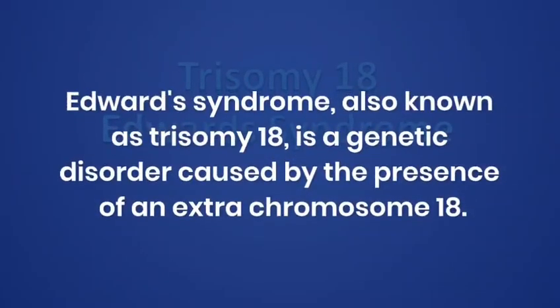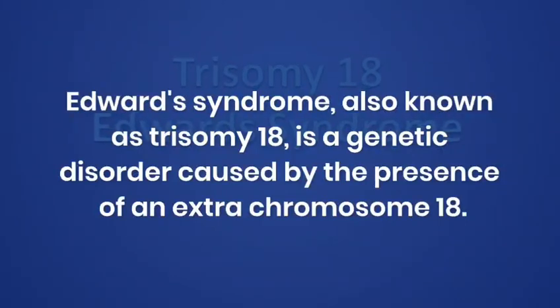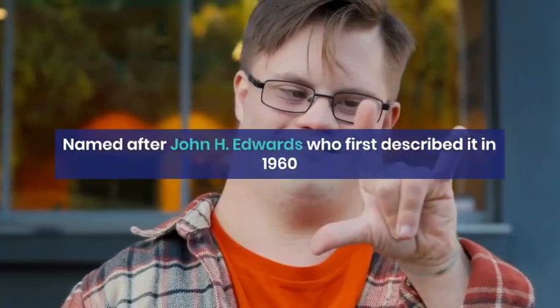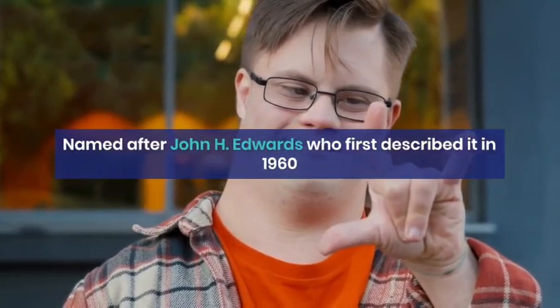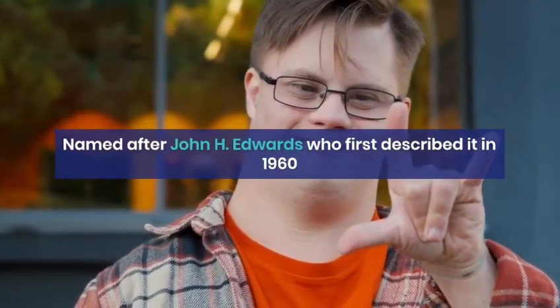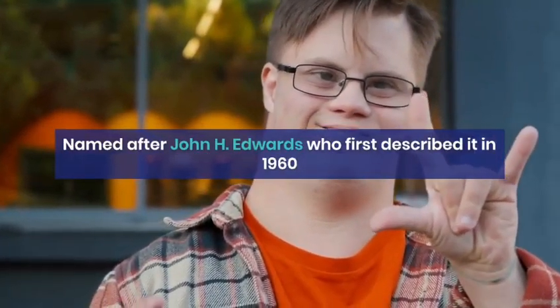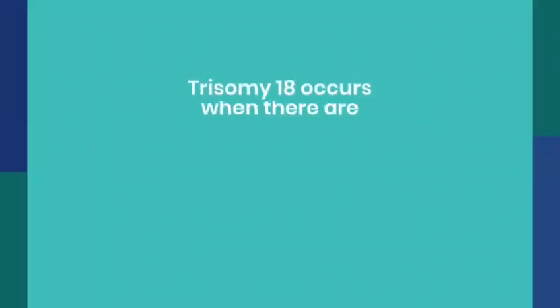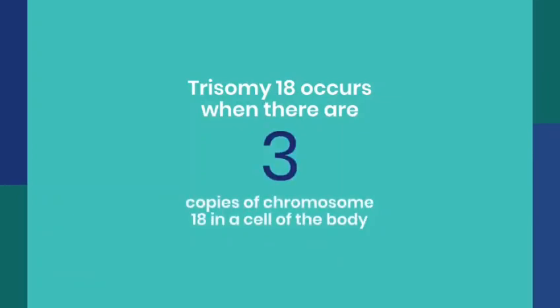Edwards syndrome, also known as trisomy 18, is a genetic disorder caused by the presence of an extra chromosome 18. This condition is named after John H. Edwards, who first described it in 1960. Trisomy 18 occurs when there are three copies of chromosome 18 in cells of the body, instead of the usual two.